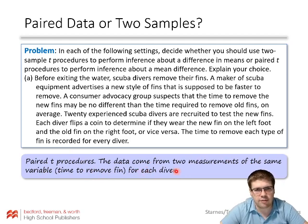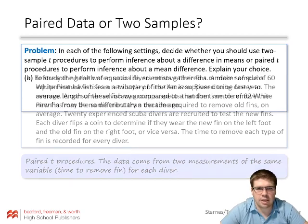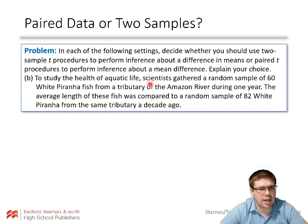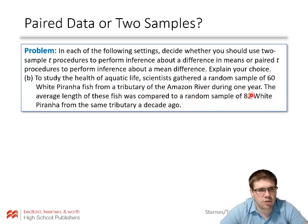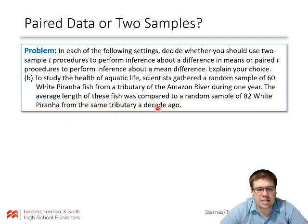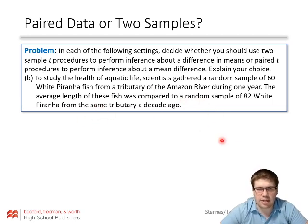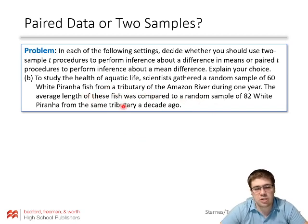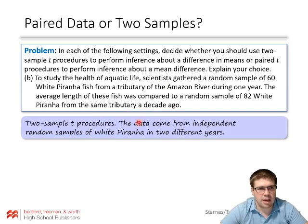Example B: To study the health of aquatic life, scientists gathered a random sample of 60 white piranha from a tributary in the Amazon River this year and compared average length to a random sample of 82 white piranha from the same tributary a decade ago. Even though it's the same tributary, the data aren't paired — there's no individual fish from one sample matched to an individual fish from the other — so this calls for two-sample t procedures: data come from independent random samples in two different years.